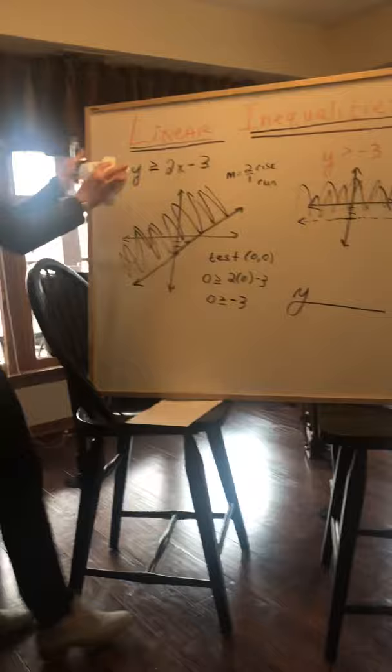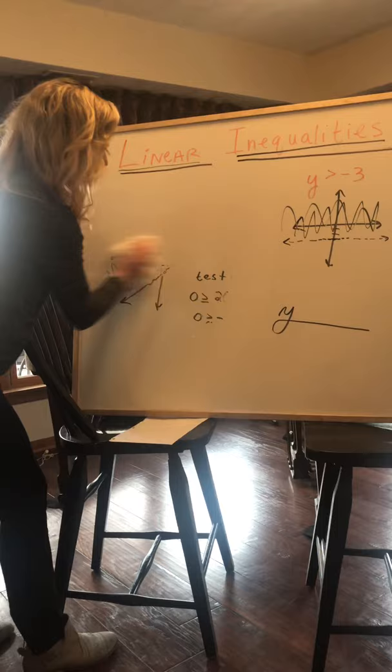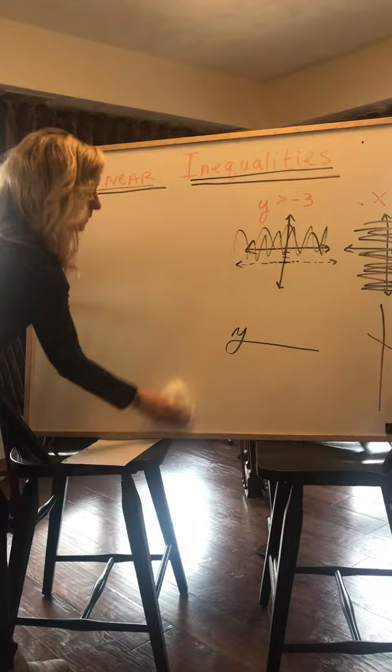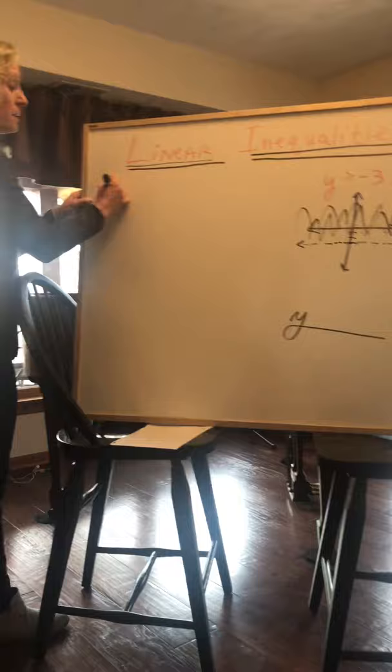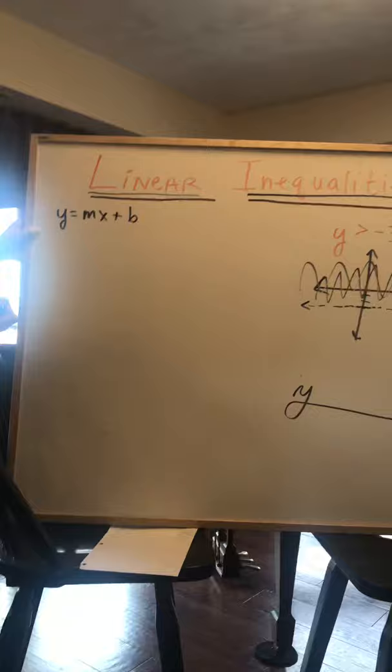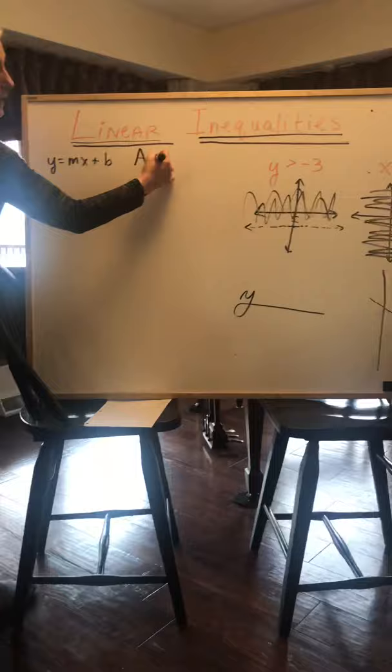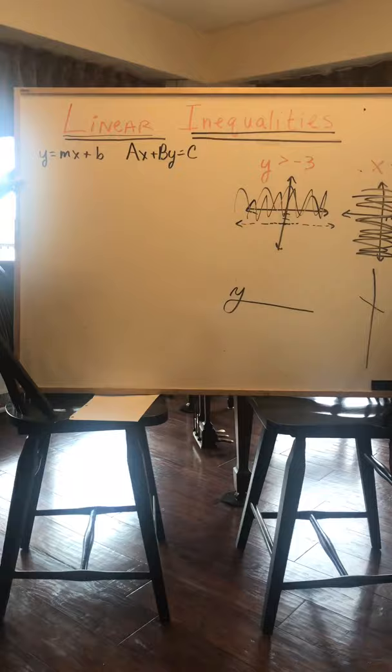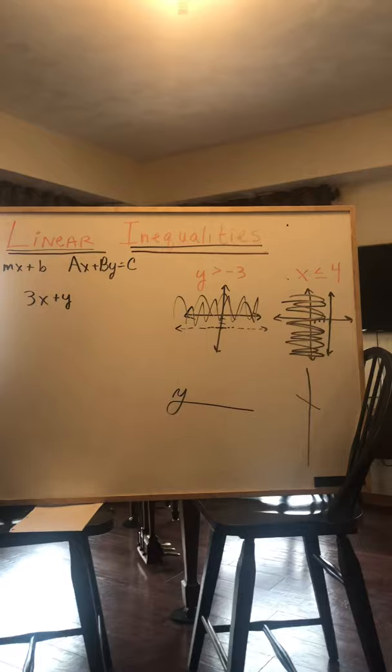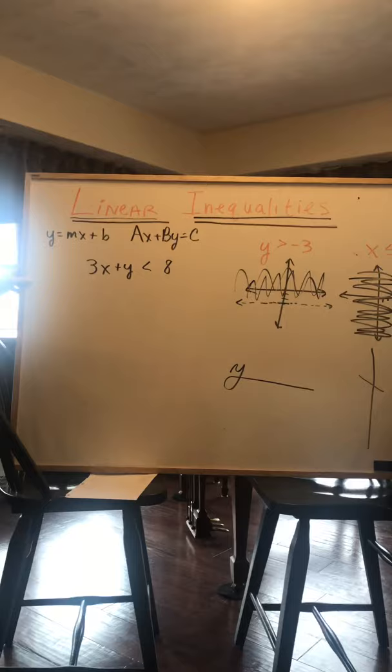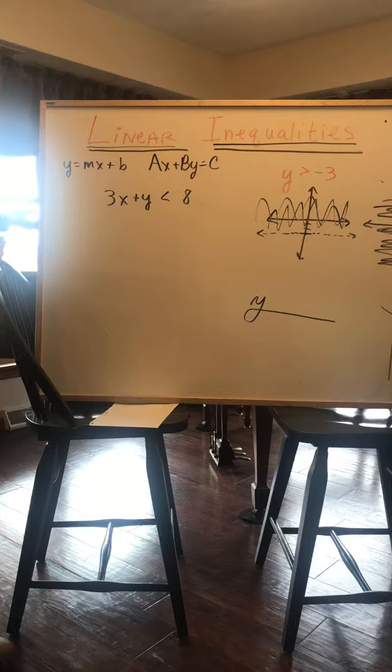So thanks for hanging in so far. Just a couple more examples left. I'm going to show you what to do when it is not in slope-intercept form. So let's just review what we know. We know that slope-intercept form is y equals mx plus b. We also learned something called standard form. Standard form is ax plus by equals c. That's linear standard form. So what do we do if we have an inequality such as 3x plus y is less than 8? Well, we're going to do the same thing that we did when we did this with equalities. We're going to go ahead and we're going to put it in slope-intercept form.